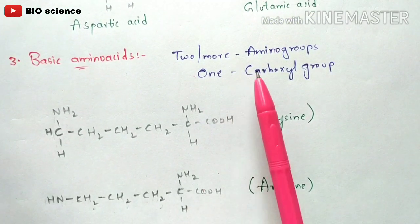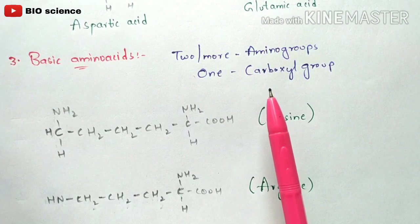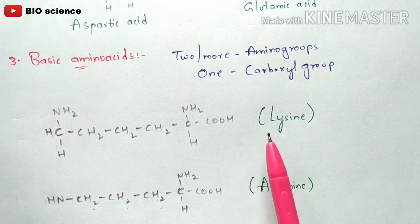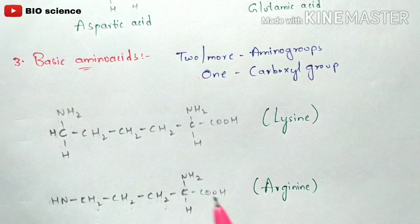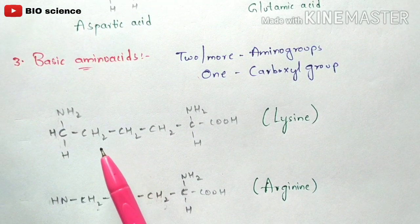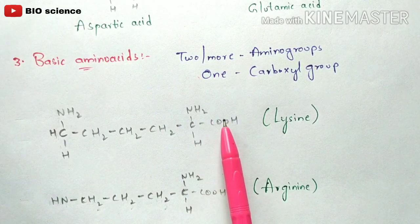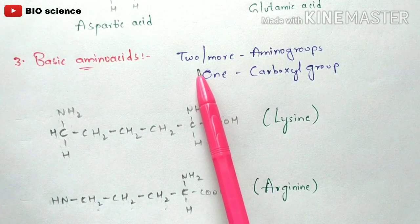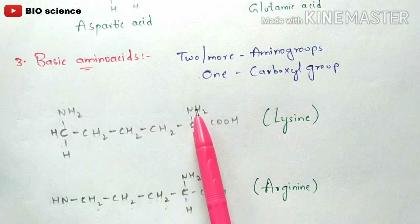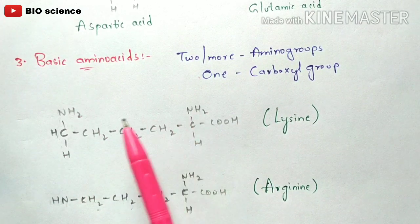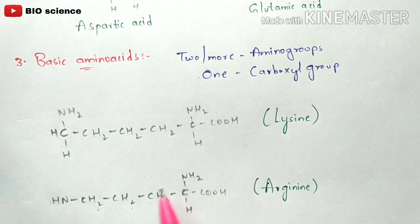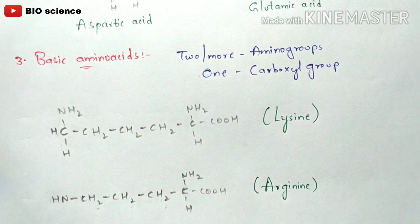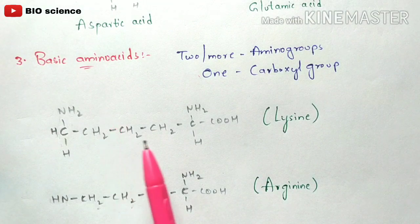Coming to basic amino acids, they contain two or more amino groups but only one carboxyl group. The best examples are lysine and arginine. In the structure of lysine and arginine, only one carboxyl group (COOH) is present, but two or more amino groups are present — one NH2 group and one NH group. These are the amino groups present in the structure of lysine and arginine, and these are the best examples of basic amino acids.